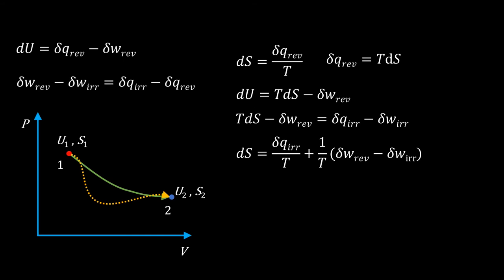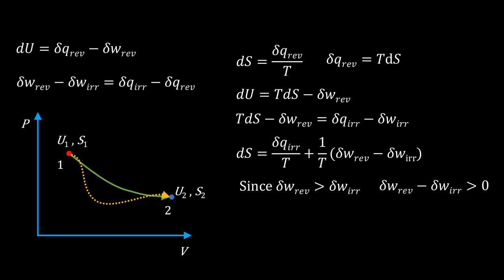That additional term is interesting. Since the work done in the reversible case is more, the difference term is a positive value. Therefore ds is greater than δq irreversible divided by T — the entropy change exceeds the q/T term in the irreversible process. This is called Clausius inequality.